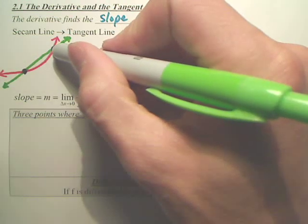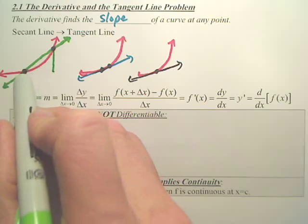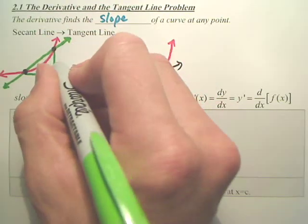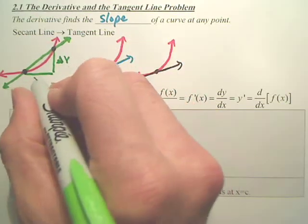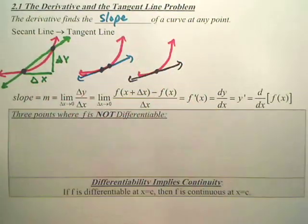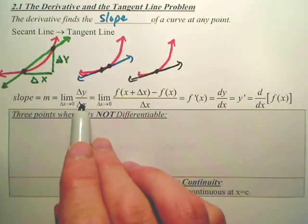Now, do you guys understand slope is change in - sorry - change is a triangle, Δy over change in x, Δx. Are you clear with that? Change of y over change of x is slope.